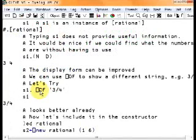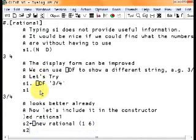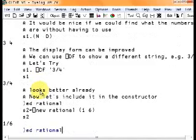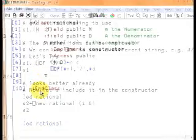Let's try it. Now we're going to ask to create a new rational number using the numbers 1 and 6, 1 sixth, and put that into S2. If we look at S2 now, now it has a better display.